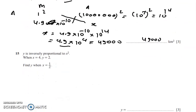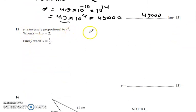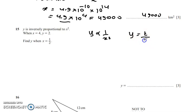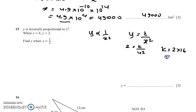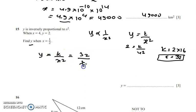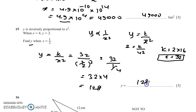Question 15: y is inversely proportional to x squared, so y = k/x². When x = 4, y = 2, giving k = 2 × 16 = 32. Now with x = 1/2: y = 32 / (1/2)² = 32 / (1/4) = 32 × 4 = 128. The answer is y = 128.